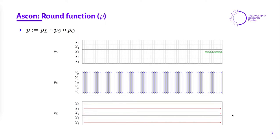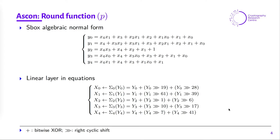If we look into the round function P, it consists of three operations. The first is the addition of an 8-bit round constant to the second word of the state. Then we apply the non-linear layer, which is the S-box operation applied column-wise to all 64 columns. Then we have the linear layer PL, which diffuses each word within the state. The S-box of ASCON has algebraic degree 2, and the linear layer is simply based on XOR and right cyclic shifts.